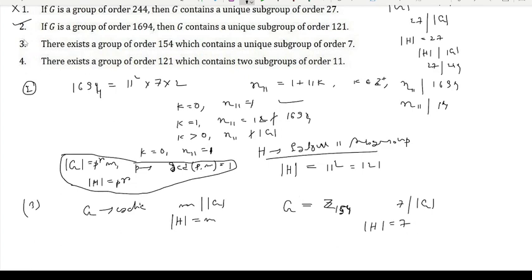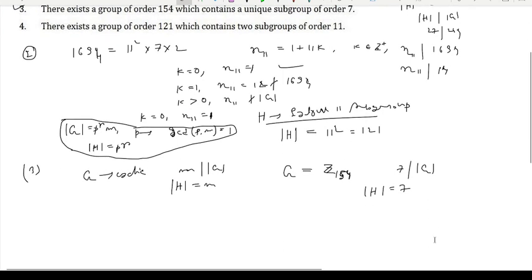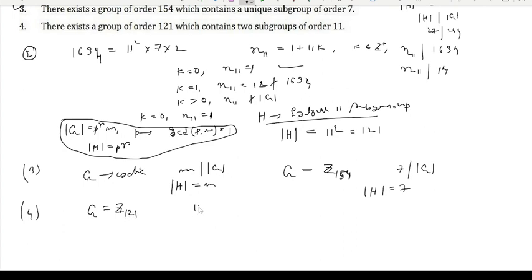Since 7 divides |G| = 154, there exists a unique subgroup H of G such that |H| = 7. So by this theorem, option 3 is correct. Now look at option 4: there exists a group of order 121 which contains two subgroups of order 11. By the above theorem, if we take G as the cyclic group Z₁₂₁, since 11 divides |G|, there will be a unique subgroup of order 11, so Z₁₂₁ does not work for this option.